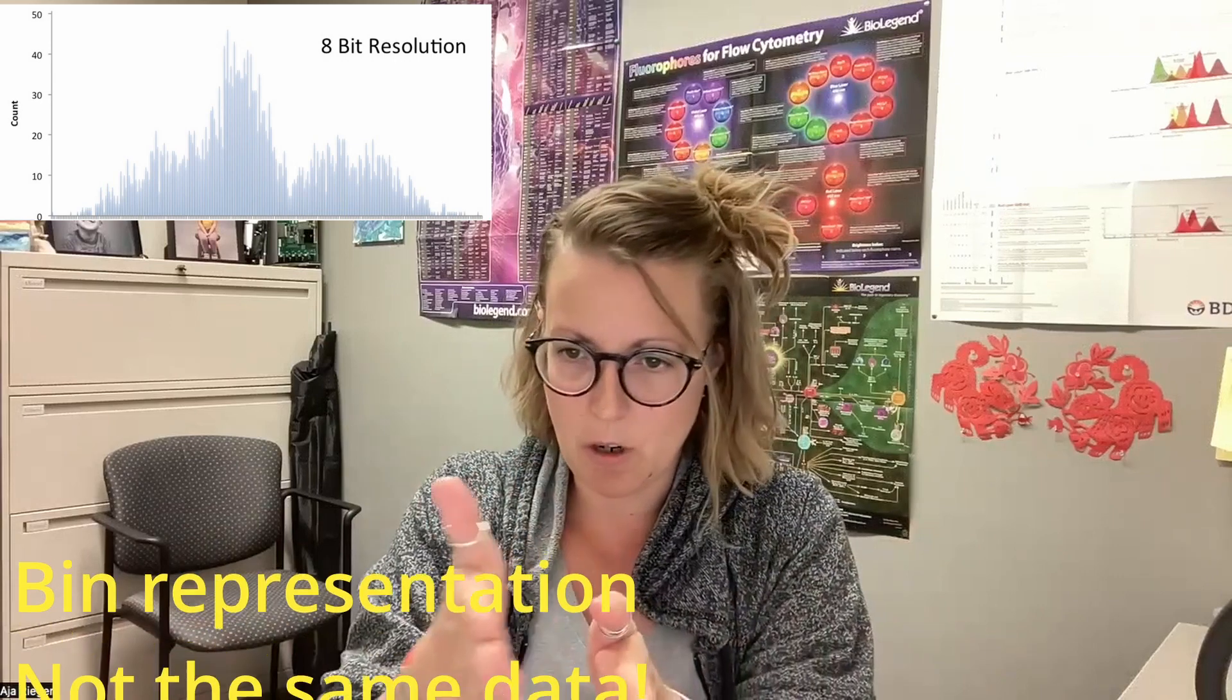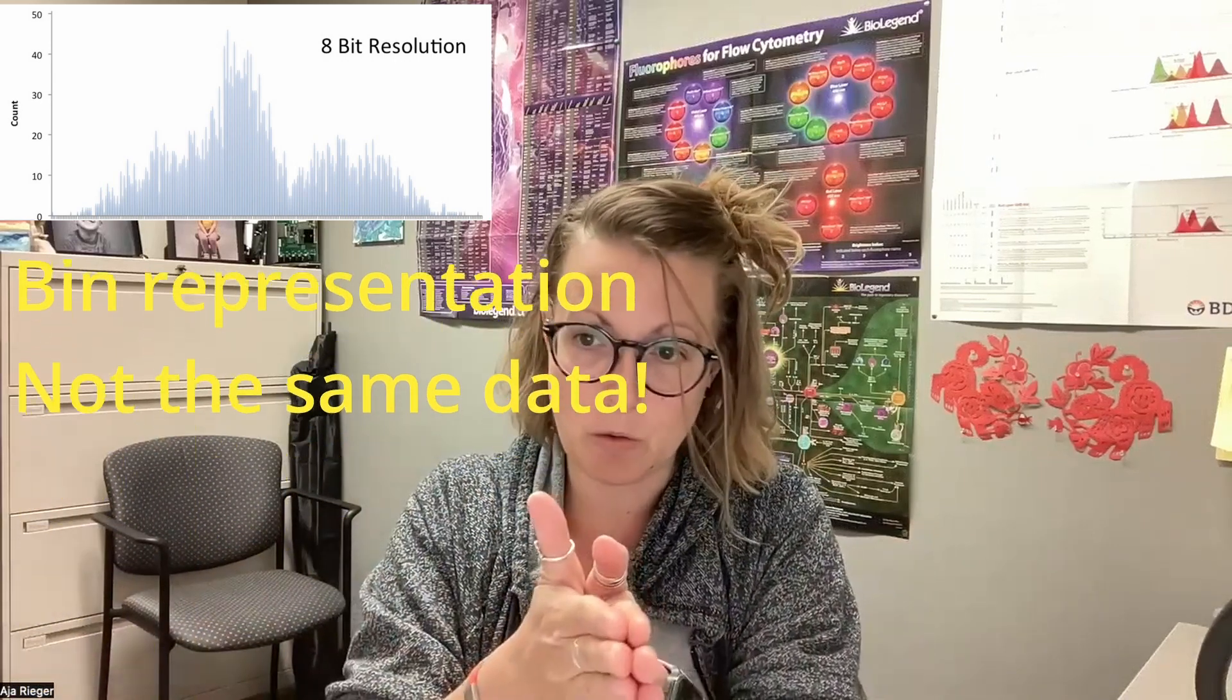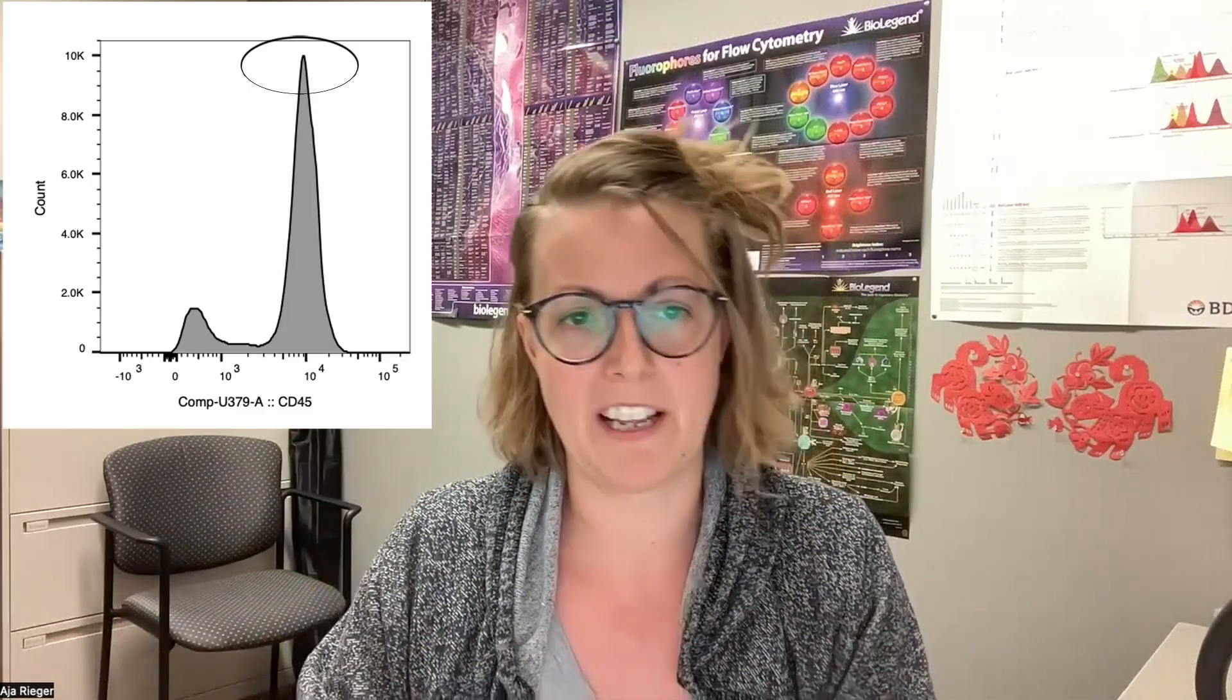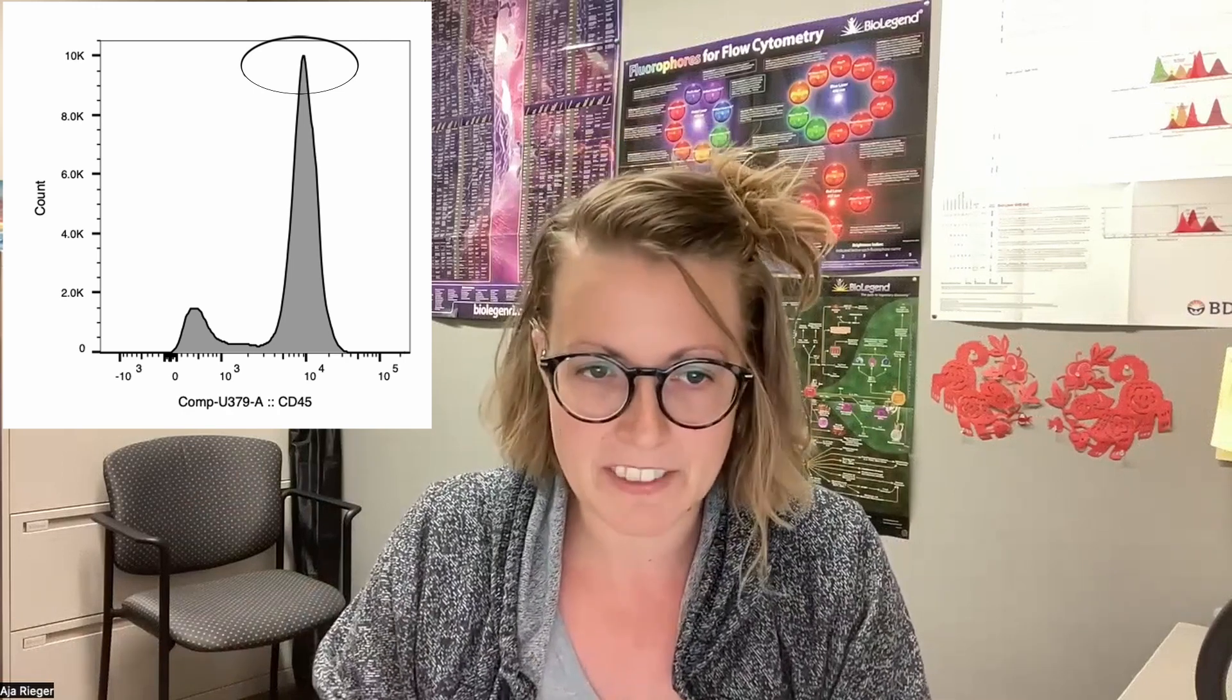Along the y-axis is the count. Now the count relates to the data bins. So even though this looks like a nice smoothed out histogram, it's actually a whole bunch of bins with discrete values that have been compressed together to make it look smooth. So you can see up at this top here, there's about 10,000 events in that bin of data.